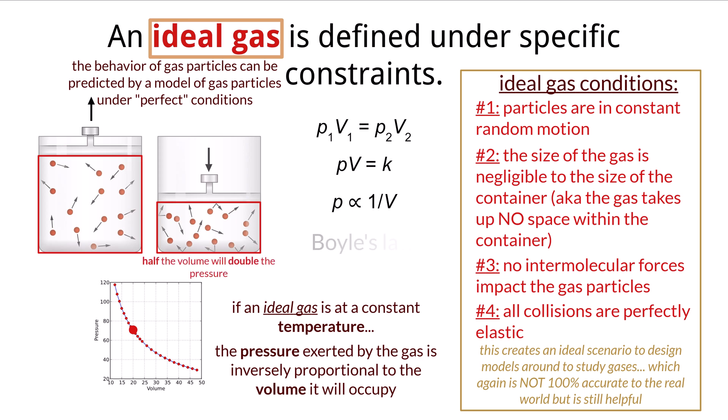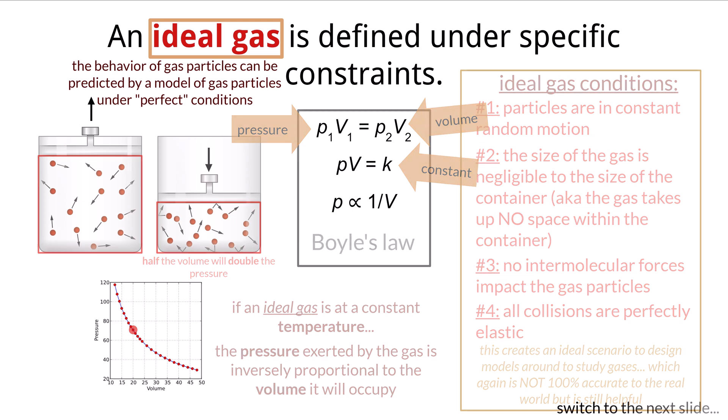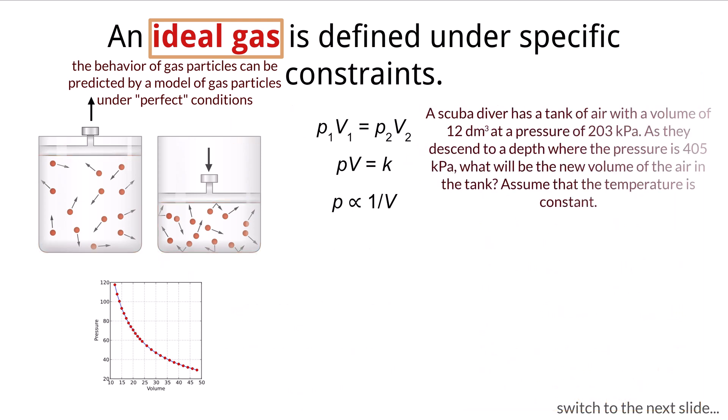This is known as Boyle's Law, and can be expressed in a few different ways as seen here. p represents pressure, v represents volume, and k is a constant that keeps the proportions between the two. These equations can be used to answer questions like the following. A scuba diver has a tank of air with a volume of 12 cubic decimeters at a pressure of 203 kilopascals. As they descend to a depth where the pressure is 405 kilopascals, what will be the new volume of the air in the tank? Assume that the temperature is constant.